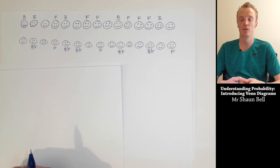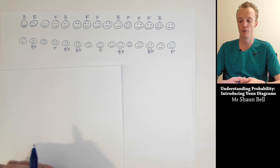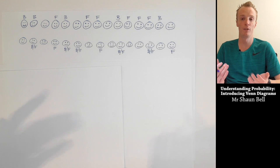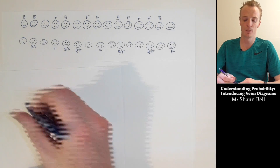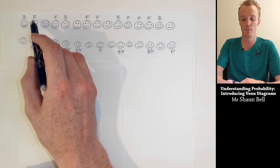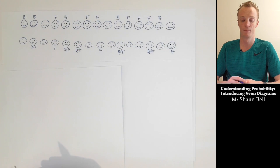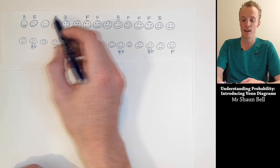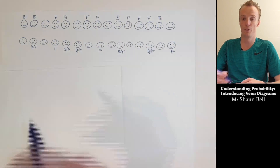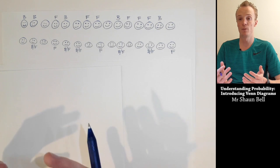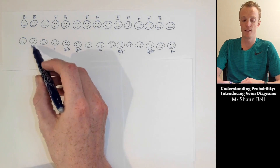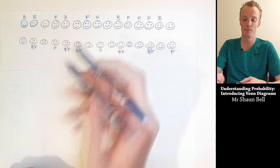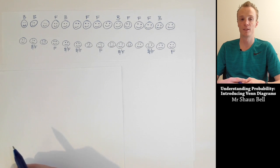Let's begin by considering a hypothetical situation where we have surveyed a group of 30 people. We asked this group whether they played basketball or football, whether they played both, or whether they didn't play either. Those that responded that they played basketball have a B above them. Those that played only football have an F above or below them. Those that played both have a B/F by their faces, and those without anything indicated they didn't play either sport.